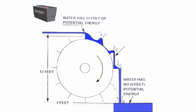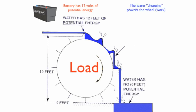Now let's change this from water to electricity with the battery. We have a battery and that battery has 12 volts of potential energy. And we have a load. So just like the water dropping powers the wheel or does the work, the voltage dropping powers the load or does the work.